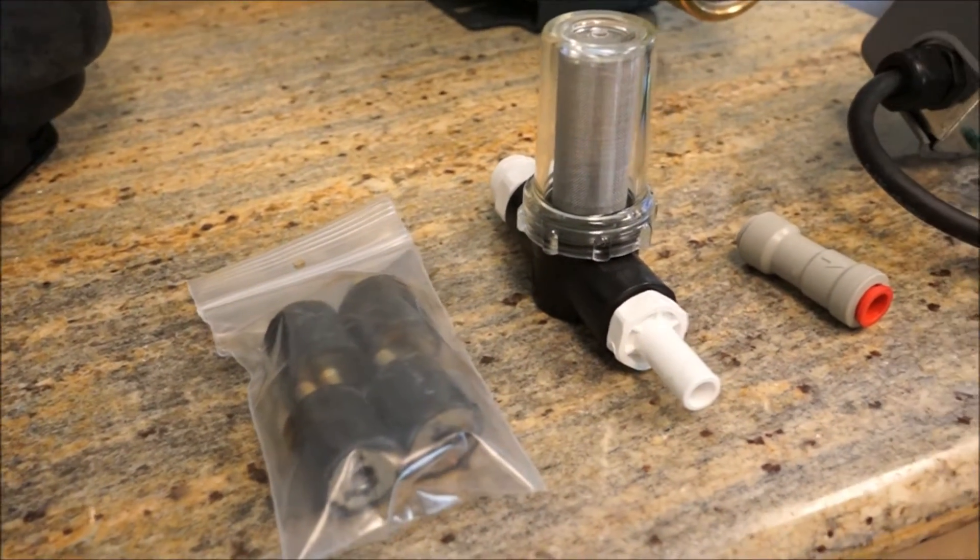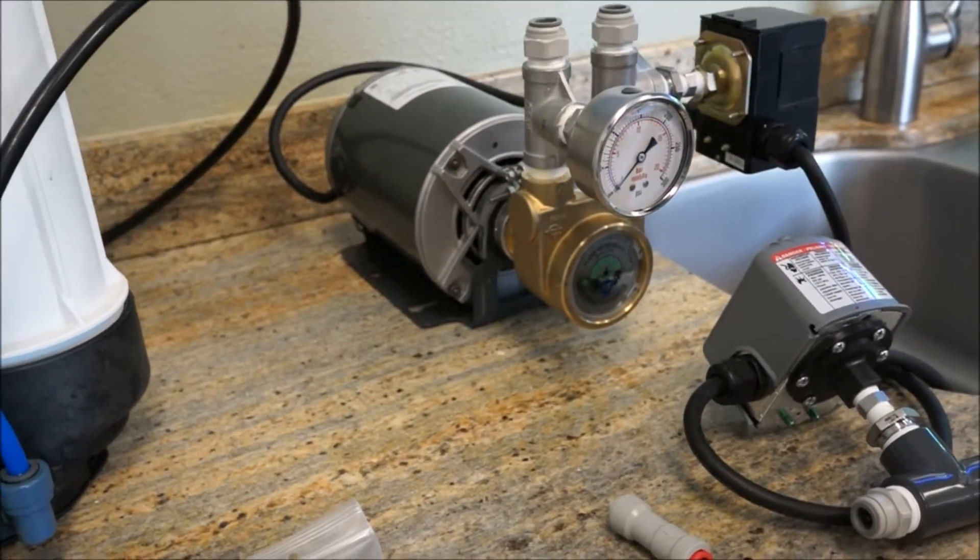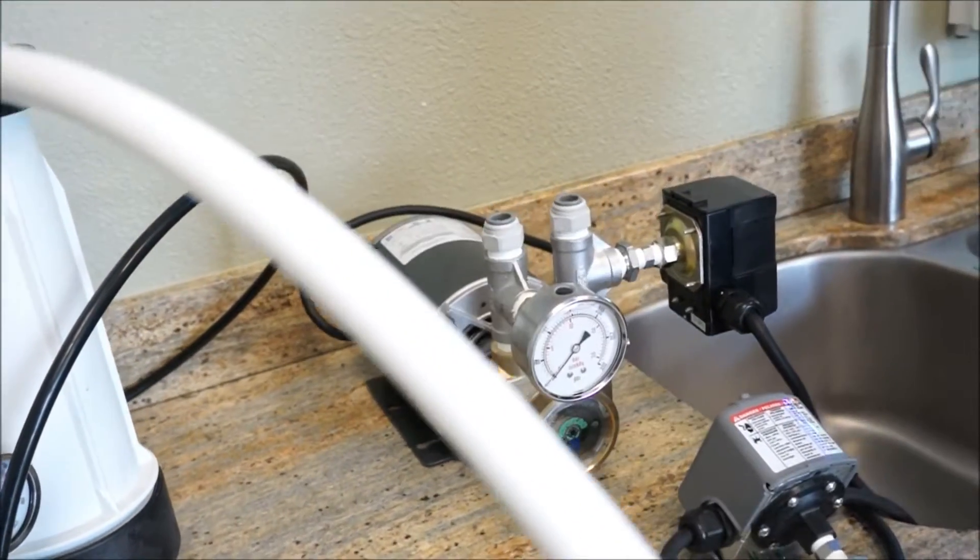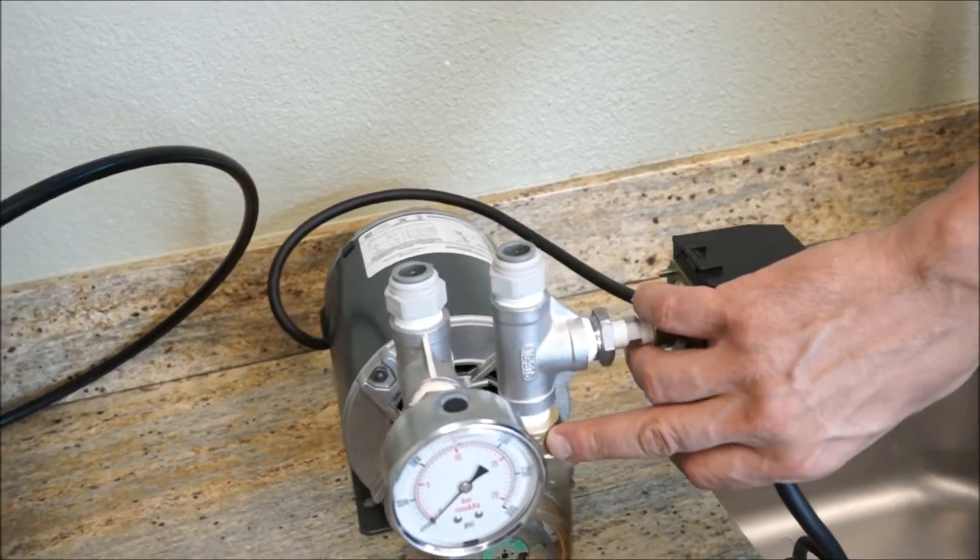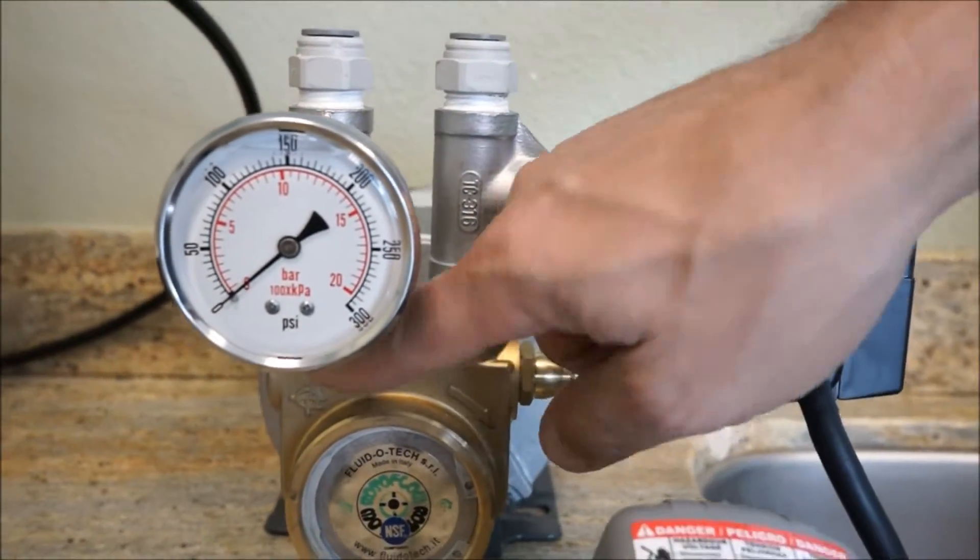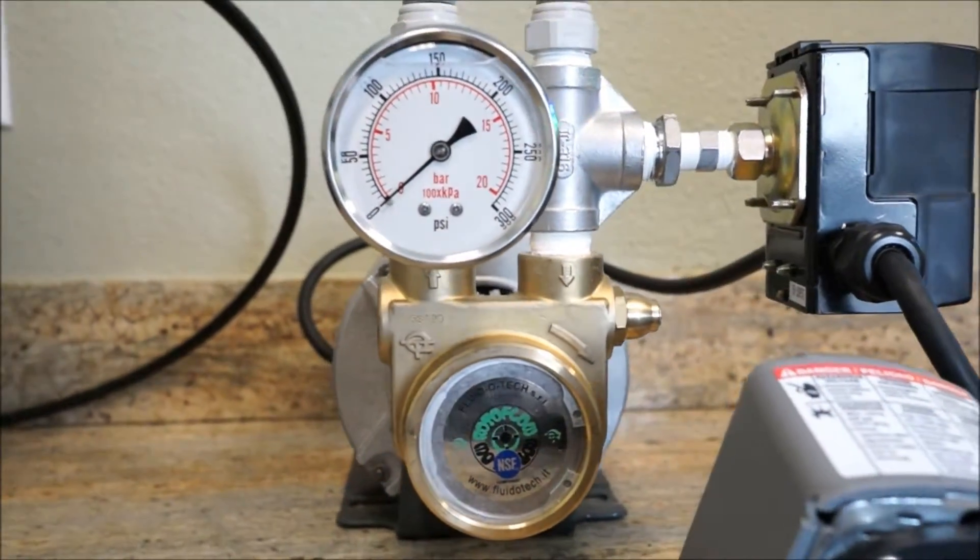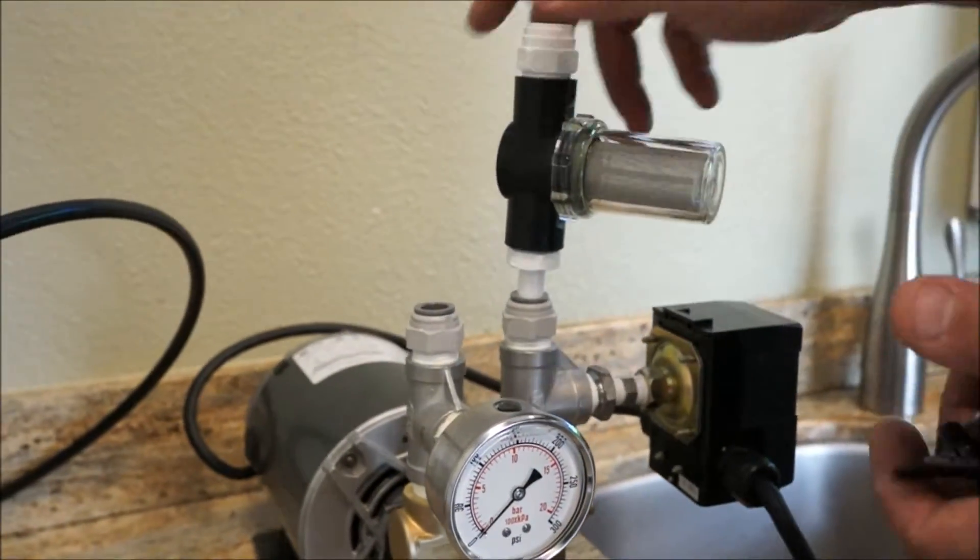The first thing you're going to want to do is take your pump protector filter and push it into the inlet of the pump. You can see that there is an arrow on the actual pump itself. The down arrow meaning that's the water that comes in and then the up arrow is the water that goes out to the unit itself. So this is your inlet. You're going to push this right in.